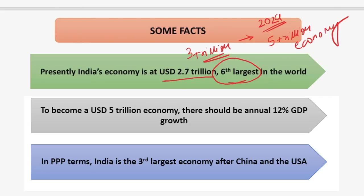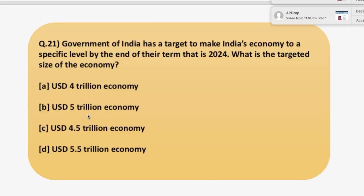The next fact is that in PPP terms — that is Purchasing Power Parity, which is an economic theory that compares different countries' currencies through a basket of goods approach — India is the third largest economy after China and USA. These were the facts to discuss before answering. So the answer to the first question is USD 5 trillion economy by the year 2024.